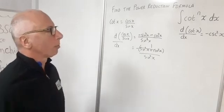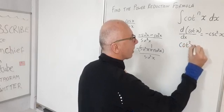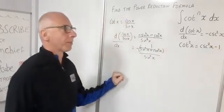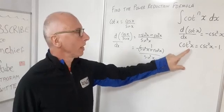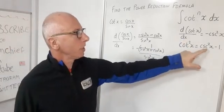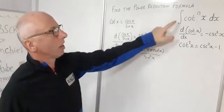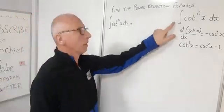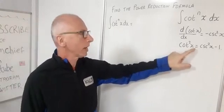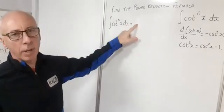We also know our trig identity for cotangent squared of x, which is cosecant squared of x minus 1. This is a good indicator that if we drop the power by 2 that would be a great place to start, because our derivative also gives us this identity. So let us go for that and start with this integral.